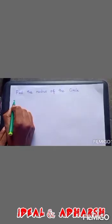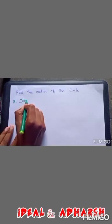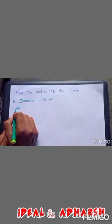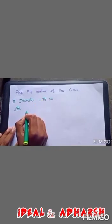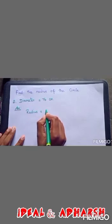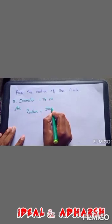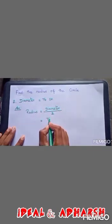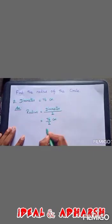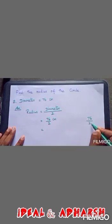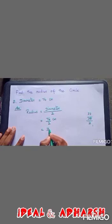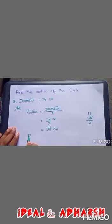Find the radius. The diameter is given, that is 76 cm. First we want to write the formula: radius is equal to diameter divided by 2. Then substitute: 76 cm divided by 2. Simplify: 38 cm. Therefore the radius is equal to 38 cm.